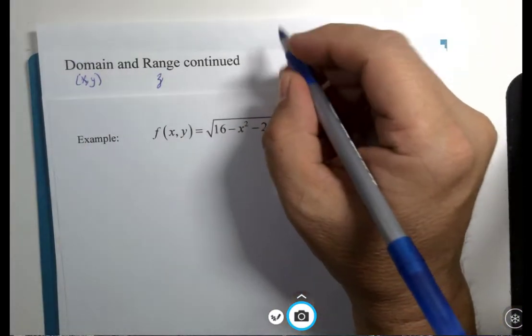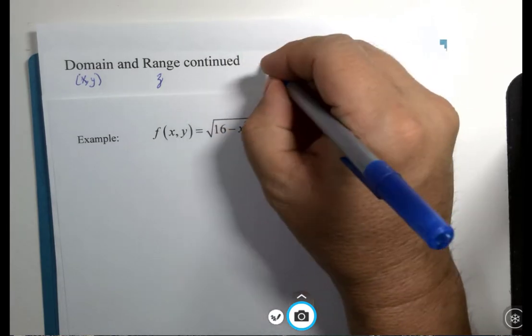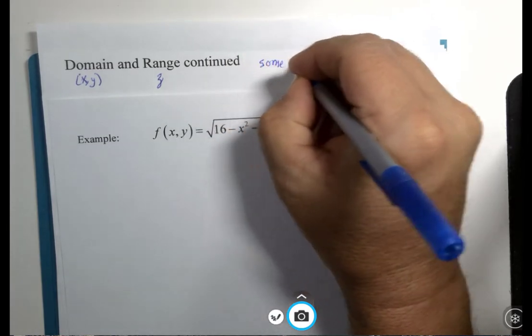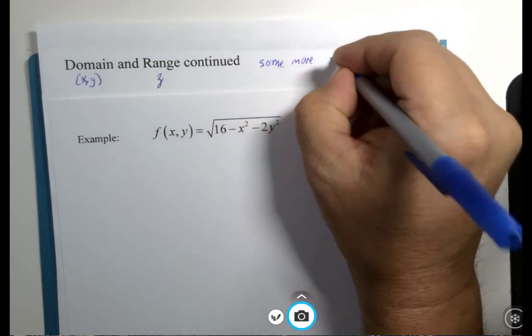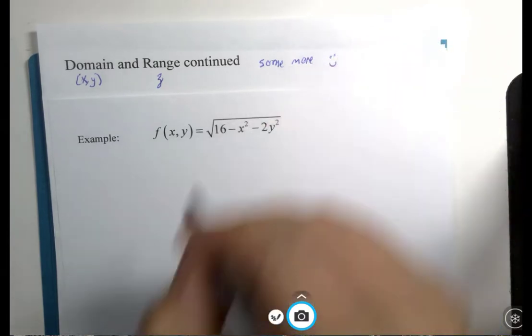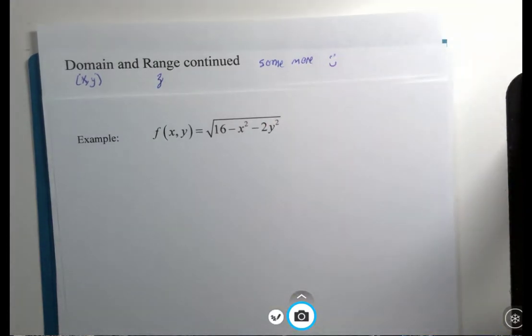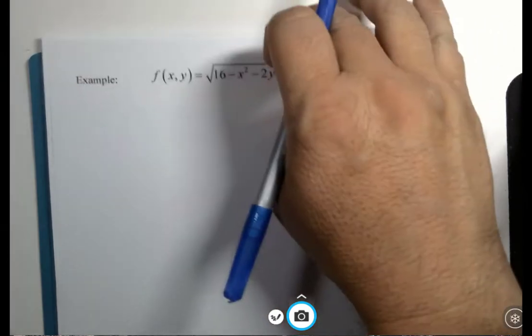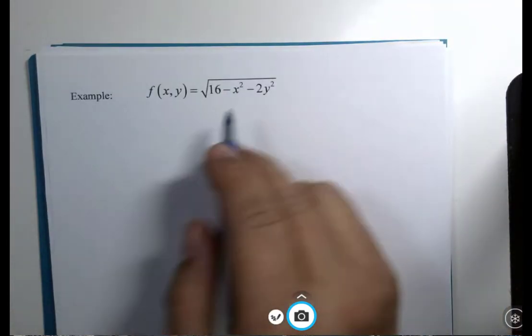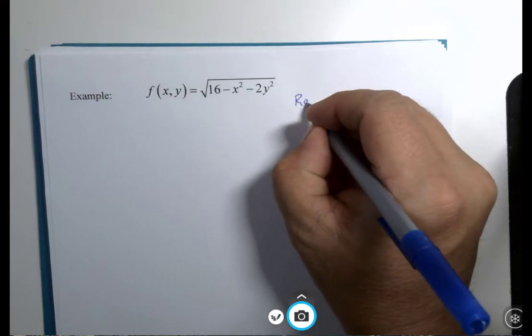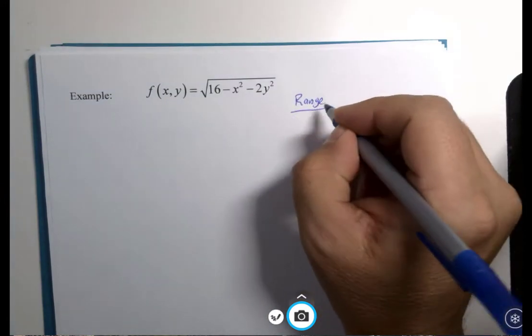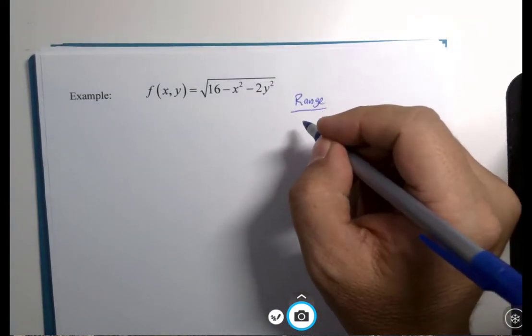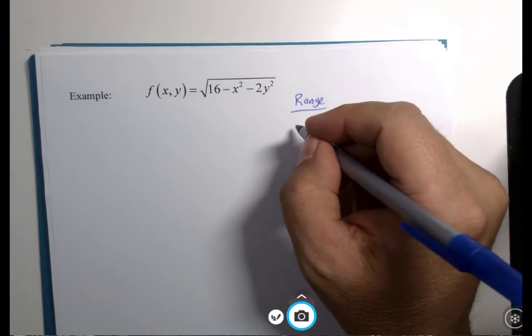Let's do a little bit more with domain and range. We're going to look at the domain and range of this function. I'm actually going to start with the range because I think it's not as difficult to look at as the previous examples.